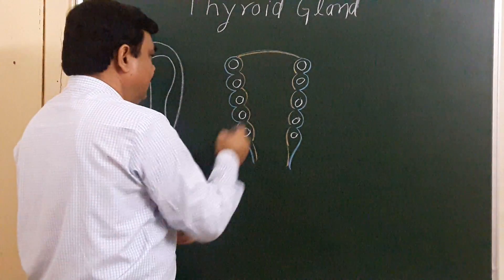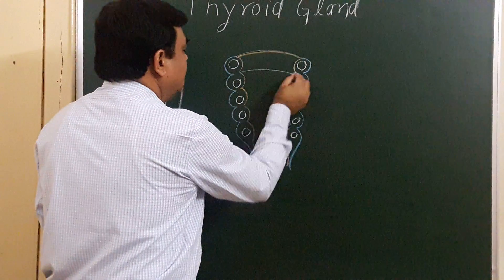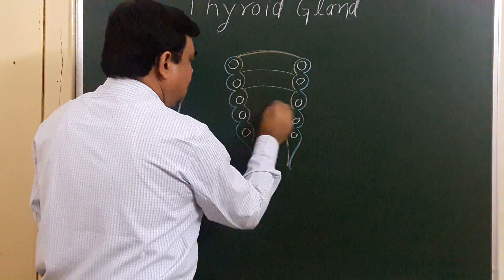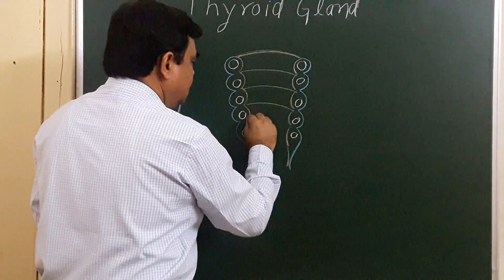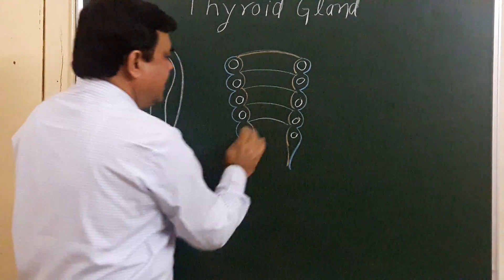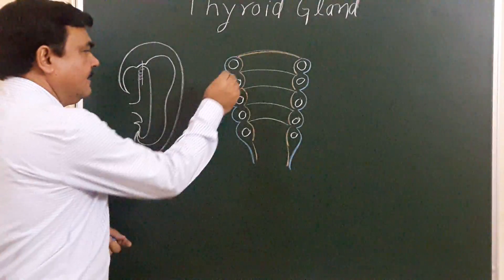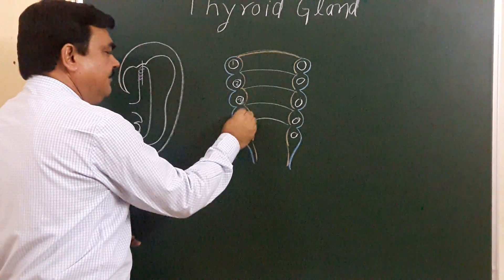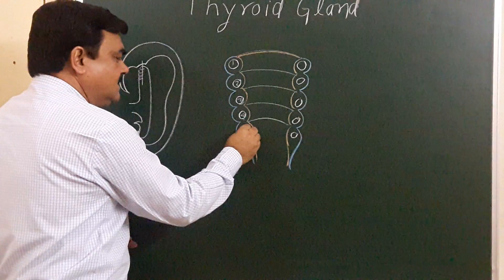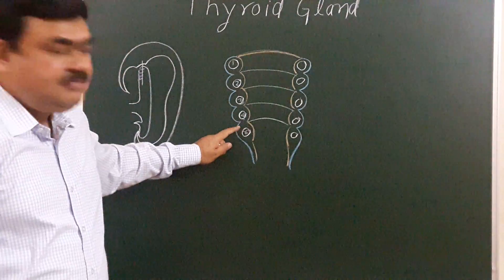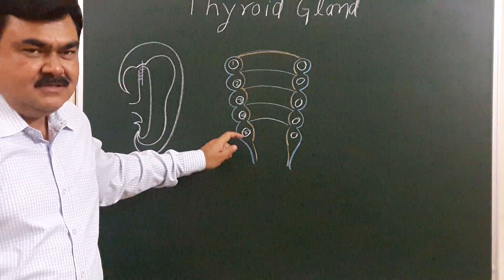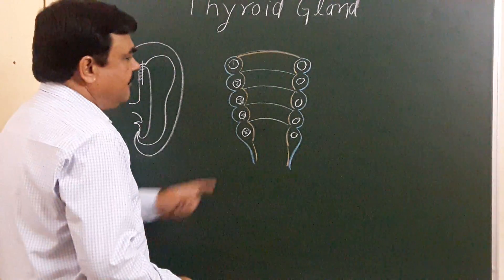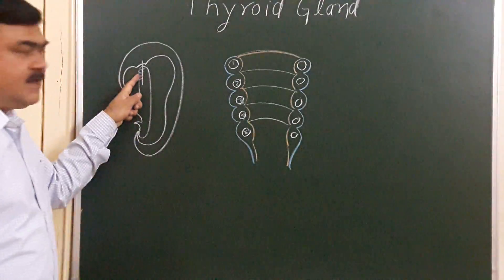In the diagram you can identify: this is the 1st arch, this is the 2nd, this is the 3rd, this is the 4th, this is the 5th, and this is the 6th arch. So these are the pharyngeal arches — the 5th disappears just after its formation.